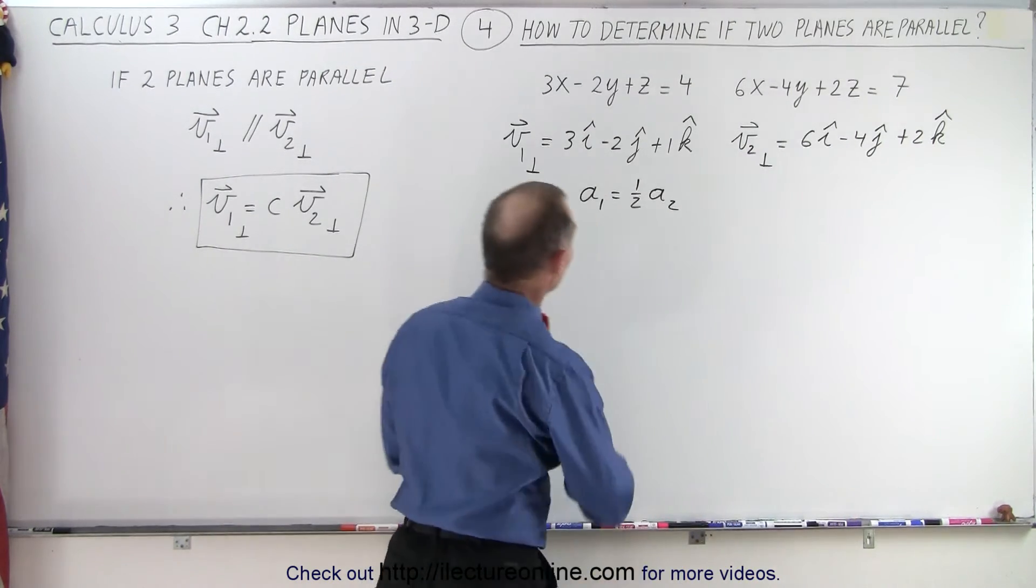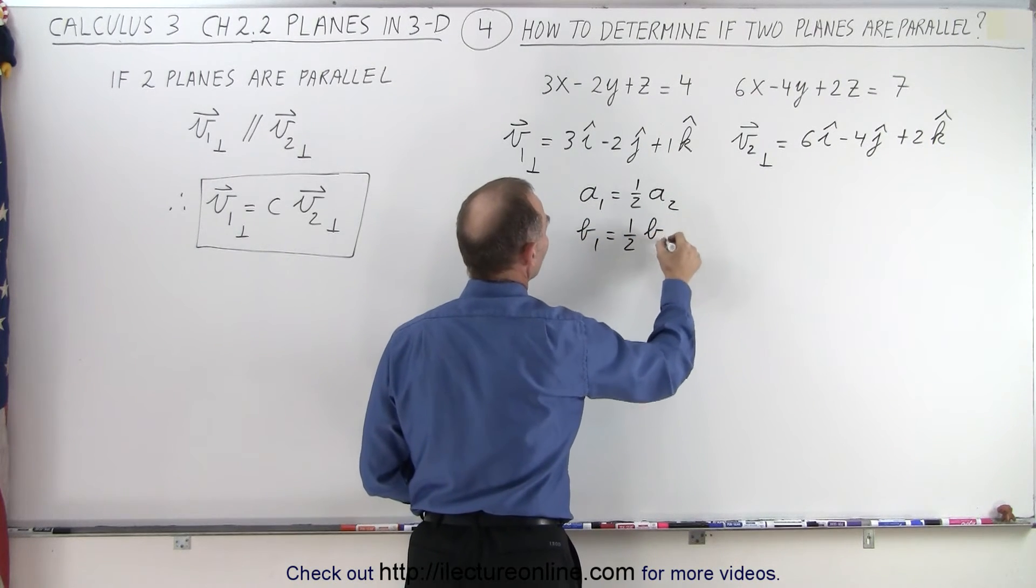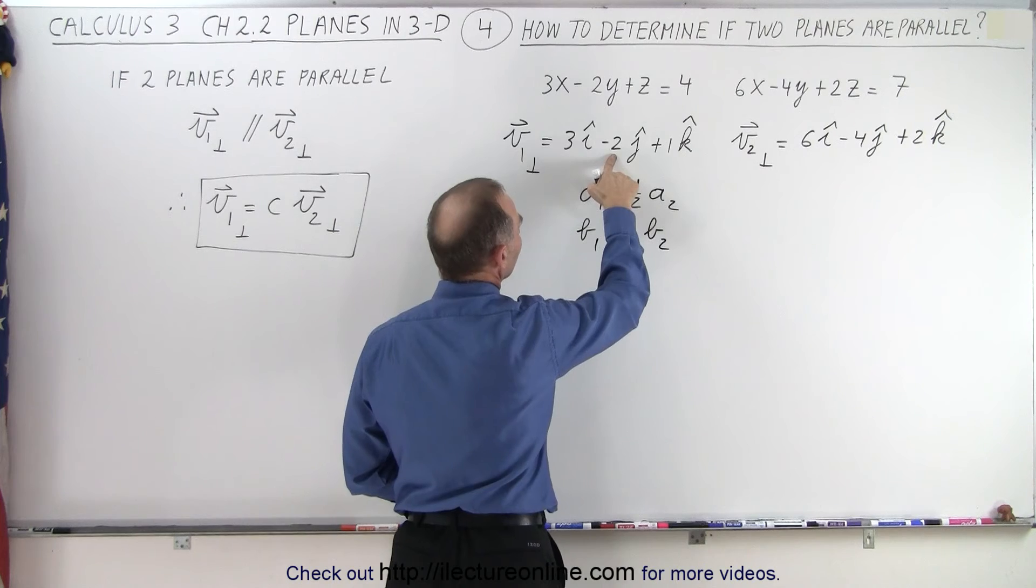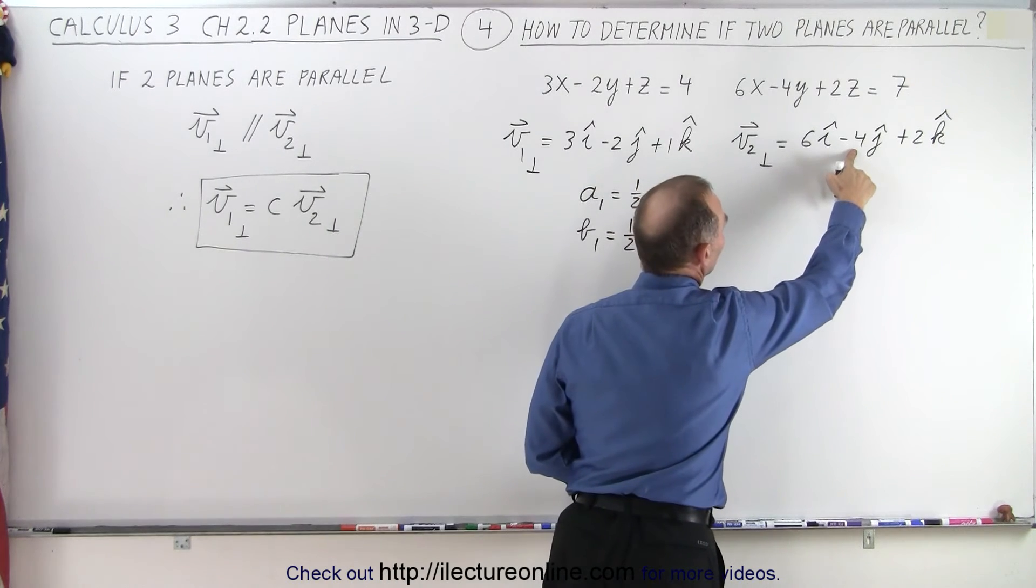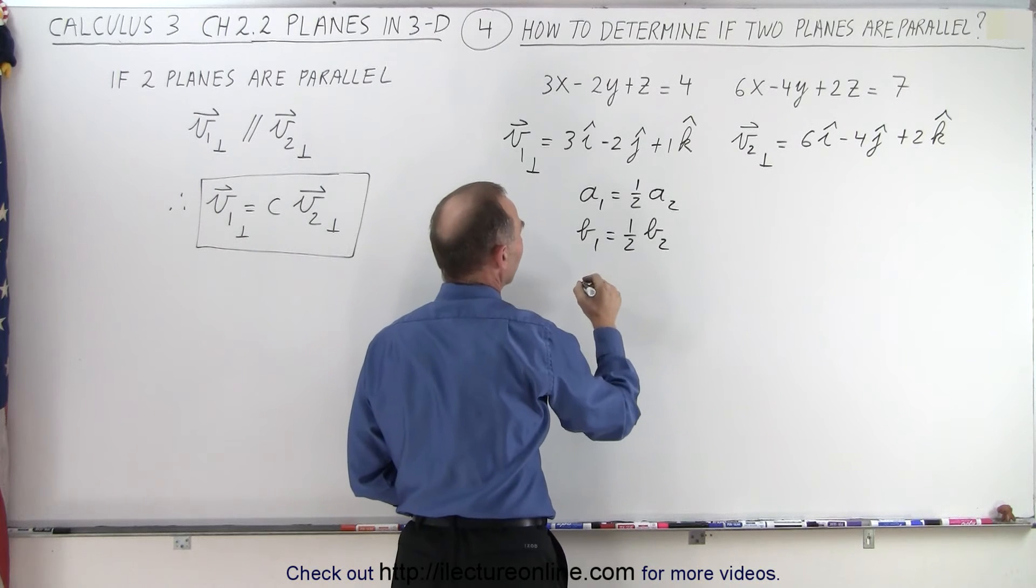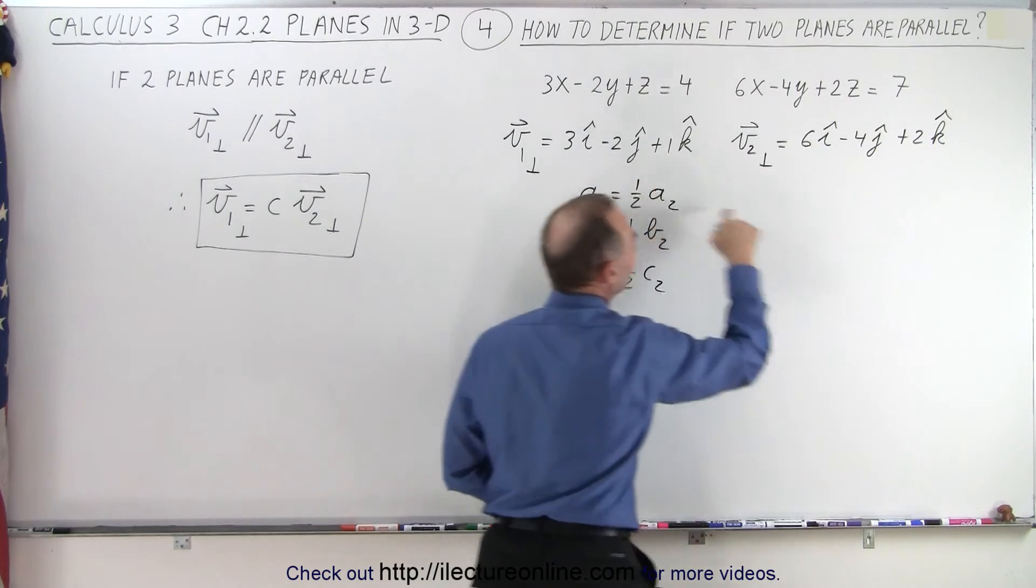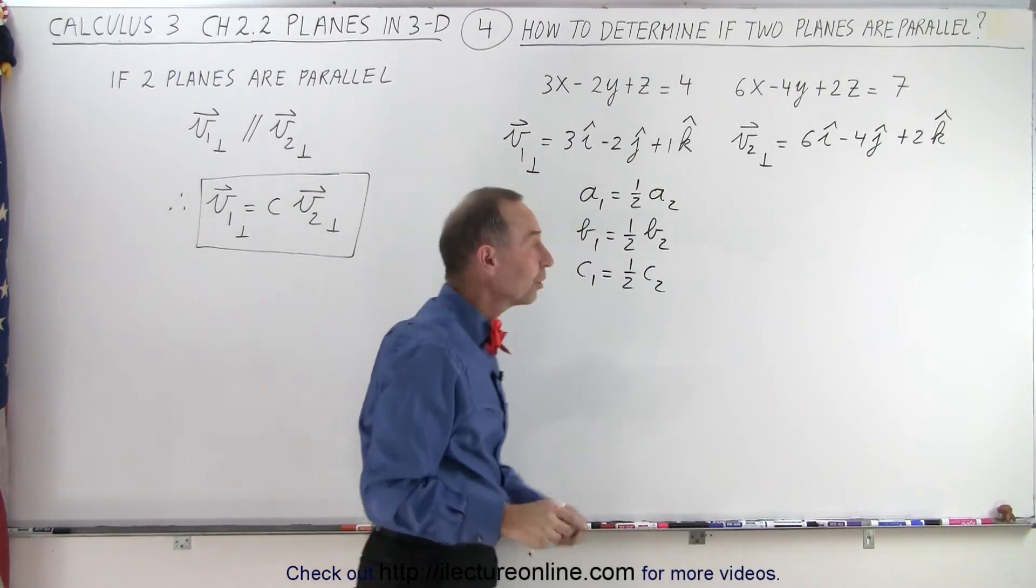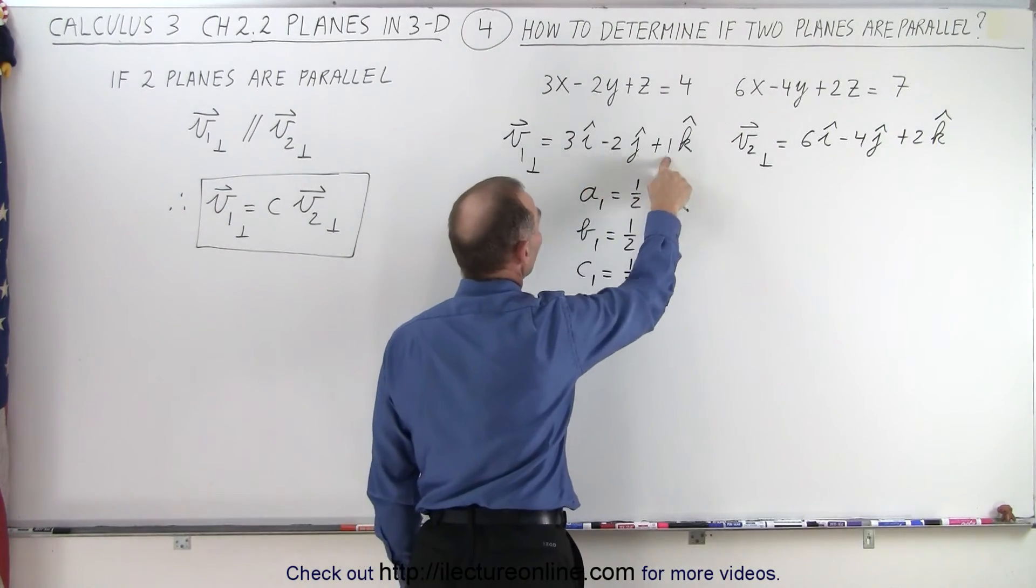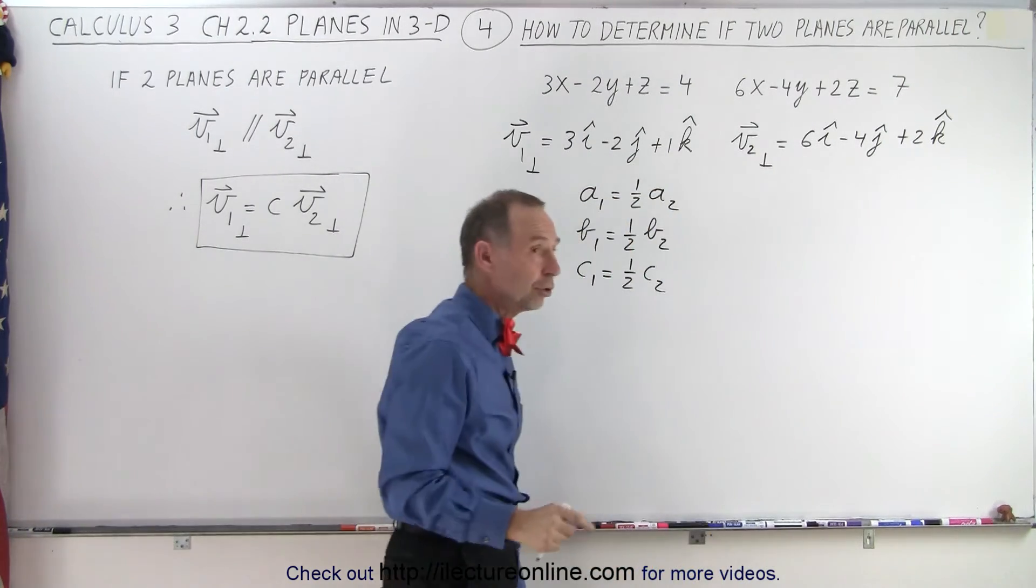b sub 1 is equal to 1 half times b sub 2. Notice b sub 1 is negative 2, b sub 2 is negative 4, so you can say that b sub 1 is half of b sub 2. And c sub 1 is equal to half of c sub 2. 1 is half of 2. In other words, each of the components of vector 1 is exactly half the size of the components of vector 2.